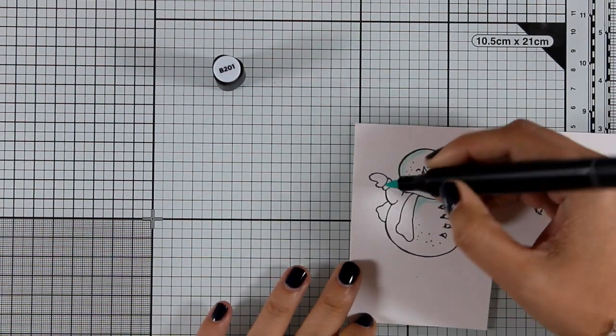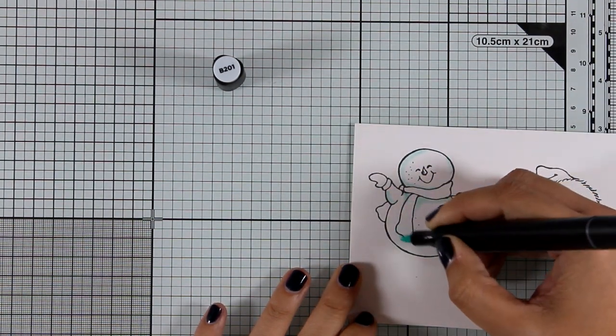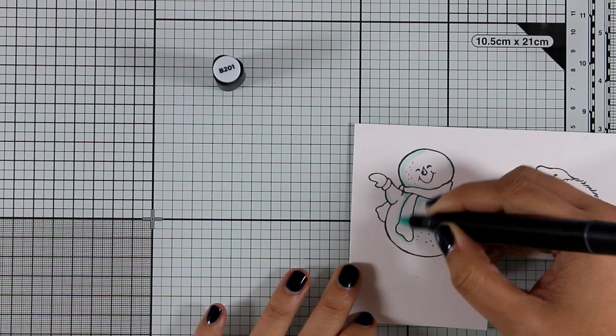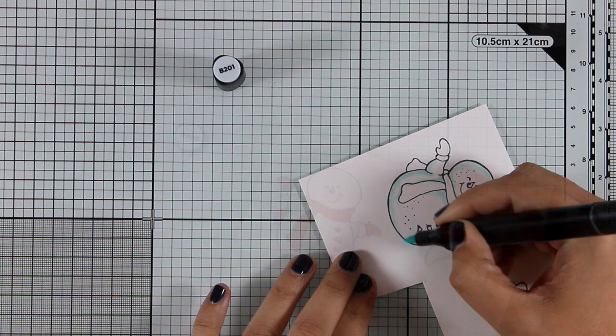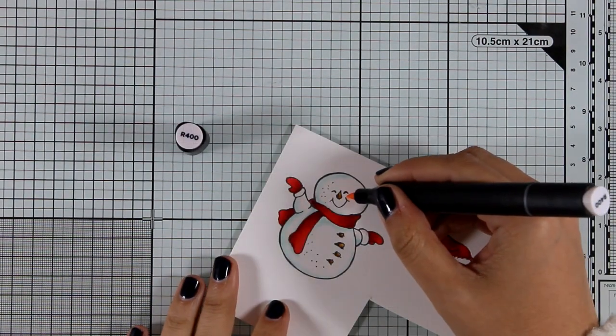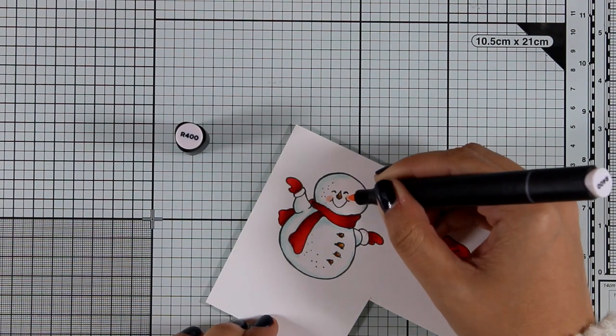Now, if you don't want this to be a Christmas card but you want to turn it into a winter card, you can use other colors instead of red. I wouldn't use this hat just because it reminds me of Santa's hat. As you can see, I colored his gloves, his scarf, and his hat with red. I'm also adding some pink cheeks.